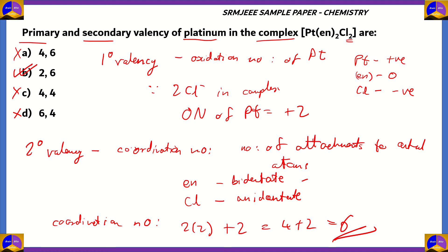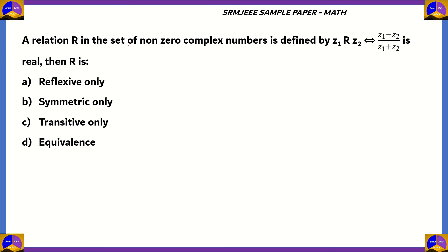The coordination number of platinum in this complex will be 2 times 2 plus 2, which is 4 plus 2, which equals 6. So option B is the correct option with primary valency 2 and secondary valency 6. Now let's look at another question — this one's from mathematics. A relation R in a set of non-zero complex numbers is defined by z₁ R z₂ if z₁ minus z₂ divided by z₁ plus z₂ is real. We need to find out whether the relation is reflexive only, symmetric only, transitive only, or an equivalence relation.